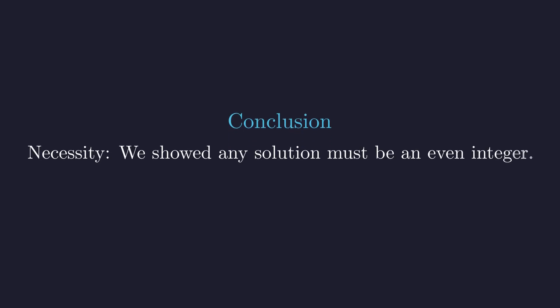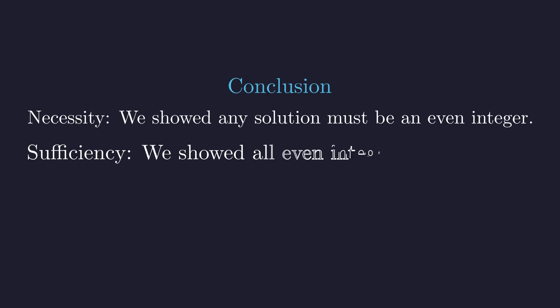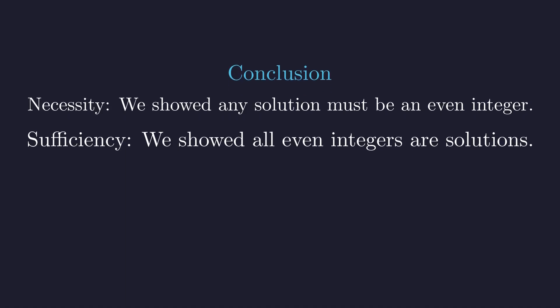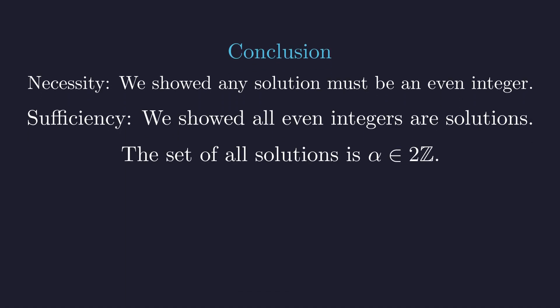Let's assemble our results into a final, complete answer. Our case-by-case analysis proved that any potential solution must be an even integer, as all other cases led to a contradiction. And our initial check confirmed that every even integer does, in fact, satisfy the condition for all n. Combining necessity and sufficiency gives our complete characterization. Alpha must be an even integer.